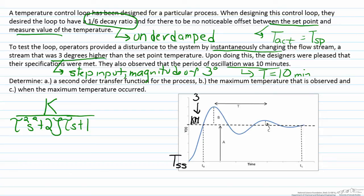The period, the time here is given as ten minutes, and we know that the decay ratio which we can get from here, which is c over b, that equals one over six.